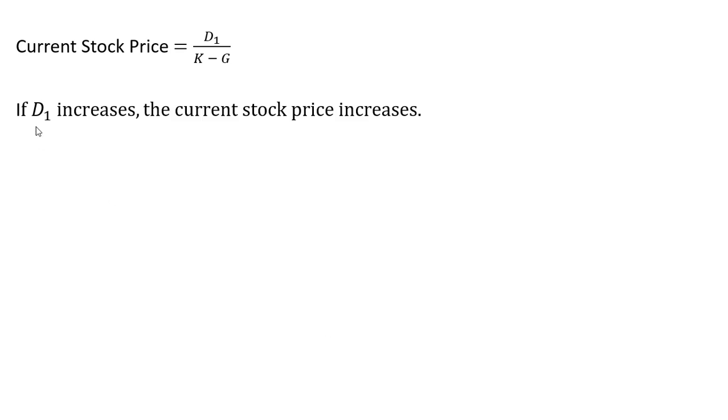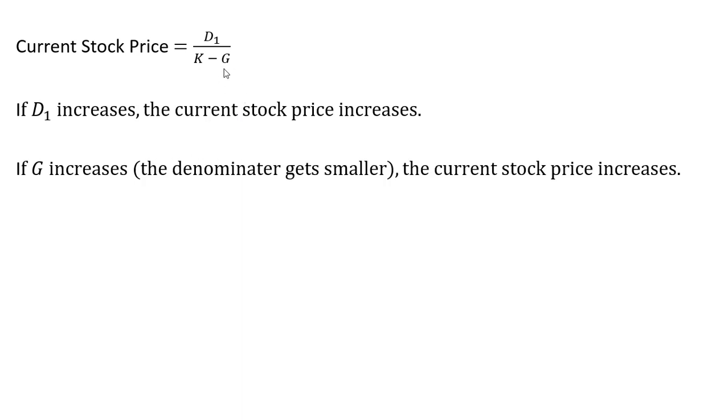So a few things about this formula. If the dividend increases, the current stock price will increase. The left-hand side will get bigger as D subscript 1 goes up. If G increases, the growth rate of the dividends, if that increases, the denominator gets smaller and the current stock price will increase.